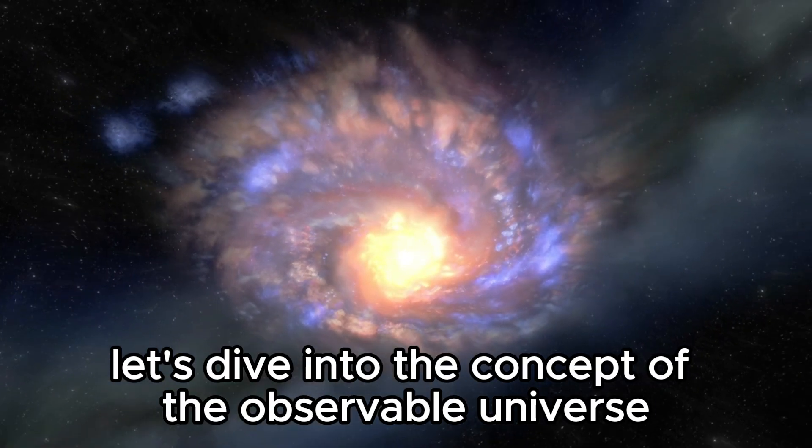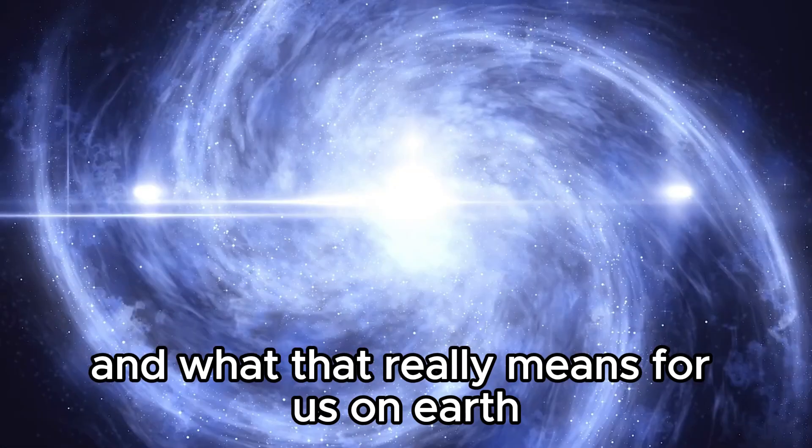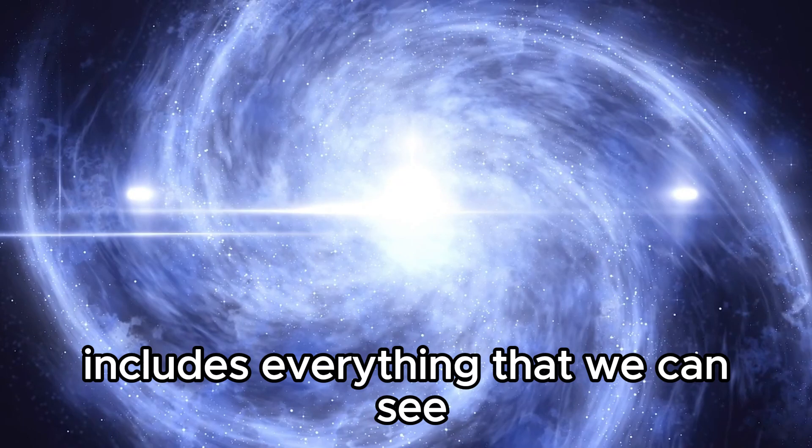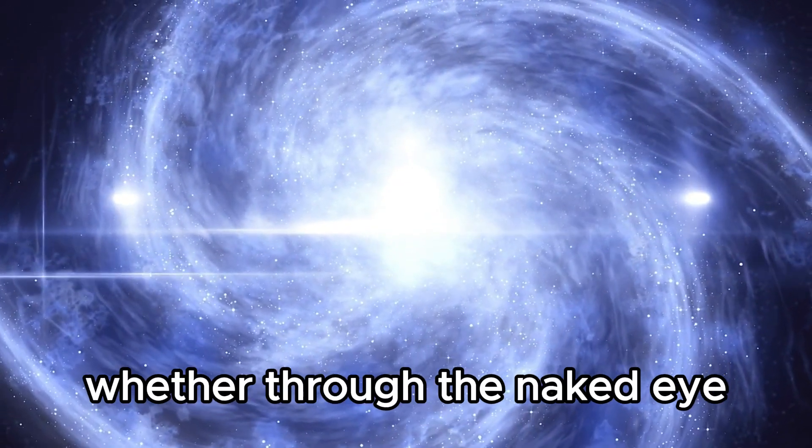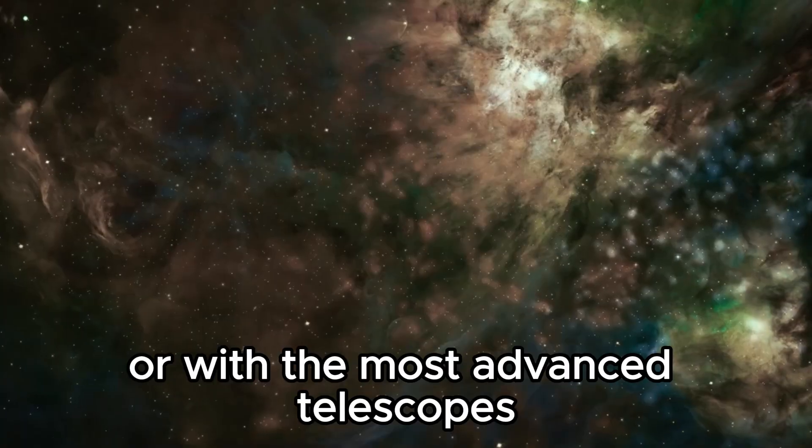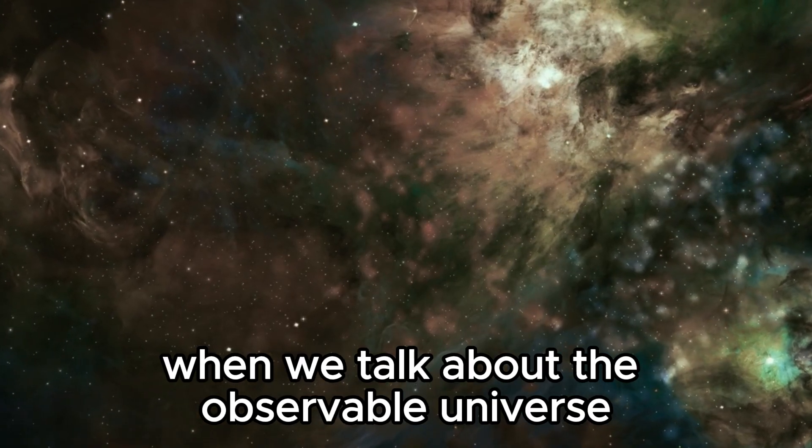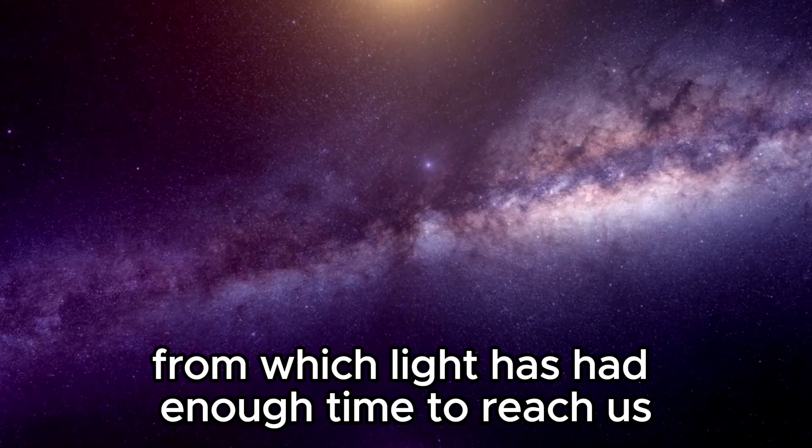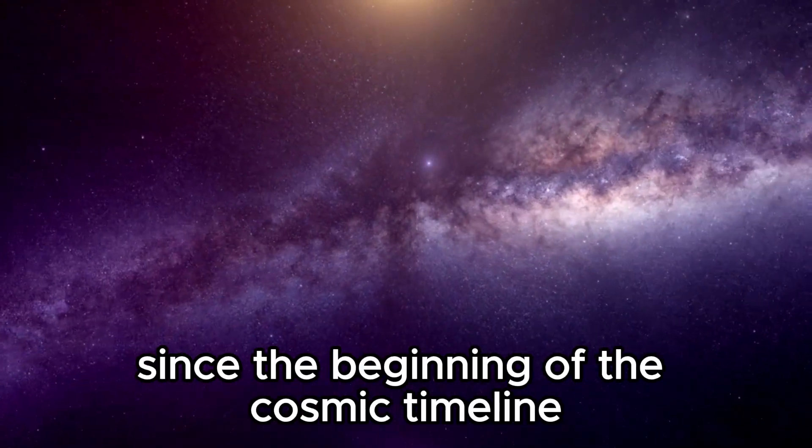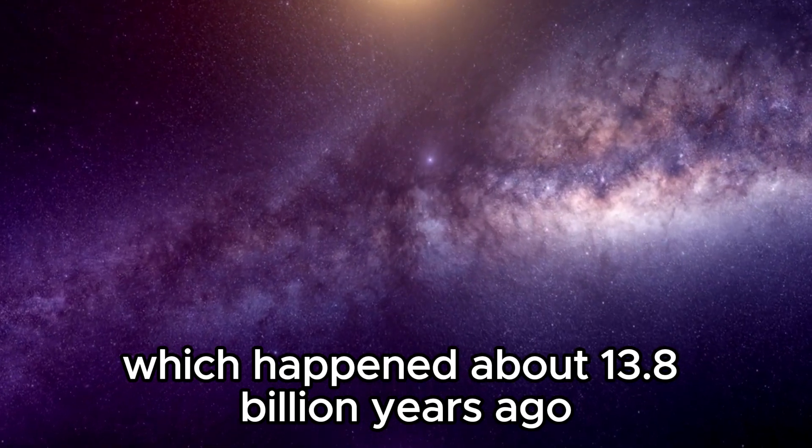Now let's dive into the concept of the observable universe and what that really means for us on Earth. The observable universe includes everything that we can see from our vantage point here on Earth, whether through the naked eye or with the most advanced telescopes like the James Webb Space Telescope. It's important to note that when we talk about the observable universe, we're really talking about the portion of the universe from which light has had enough time to reach us since the beginning of the cosmic timeline, the Big Bang, which happened about 13.8 billion years ago.